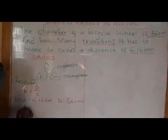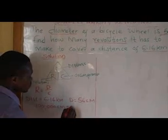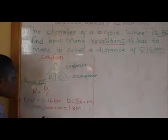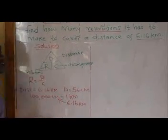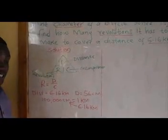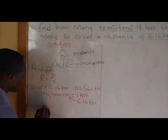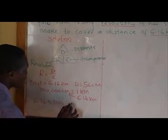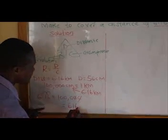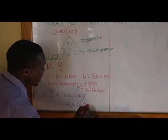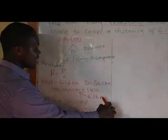100,000 centimeters equals 1 kilometer. What about 6.16 kilometers? Cross multiply: 6.16 times 100,000 gives 616,000 centimeters — that's 6.16 with five zeros. Now my units are the same: my distance is 616,000 centimeters and the diameter is 56 centimeters.